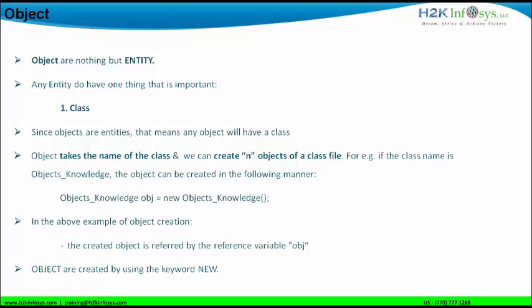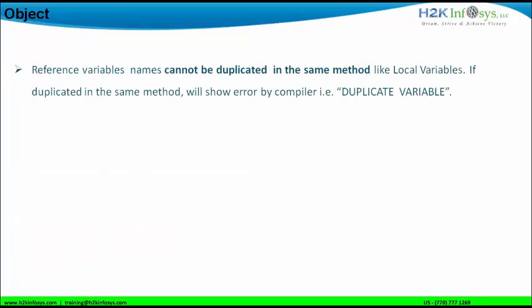In the above example, the created object is referred to by the reference variable obj, and objects are created by using the keyword new. Reference variable names cannot be duplicated in the same method, like local variables. Reference variables which refer to the object cannot be duplicated in the same method body. If duplicated in the same method body, the compiler will show an error as a duplicate variable, and this is also true for local variables.